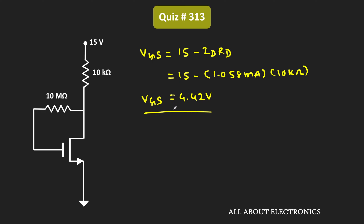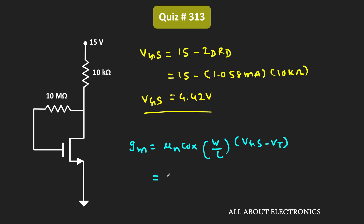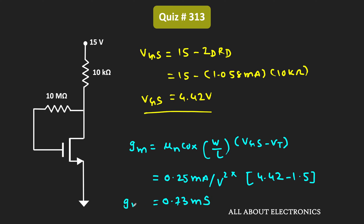Once we know the value of VGS, we can find the value of the transconductance. This transconductance can be given as µn times Cox times W/L times (VGS - Vt), which equals 0.25 mA/V. So this is the value of the transconductance at the operating point.